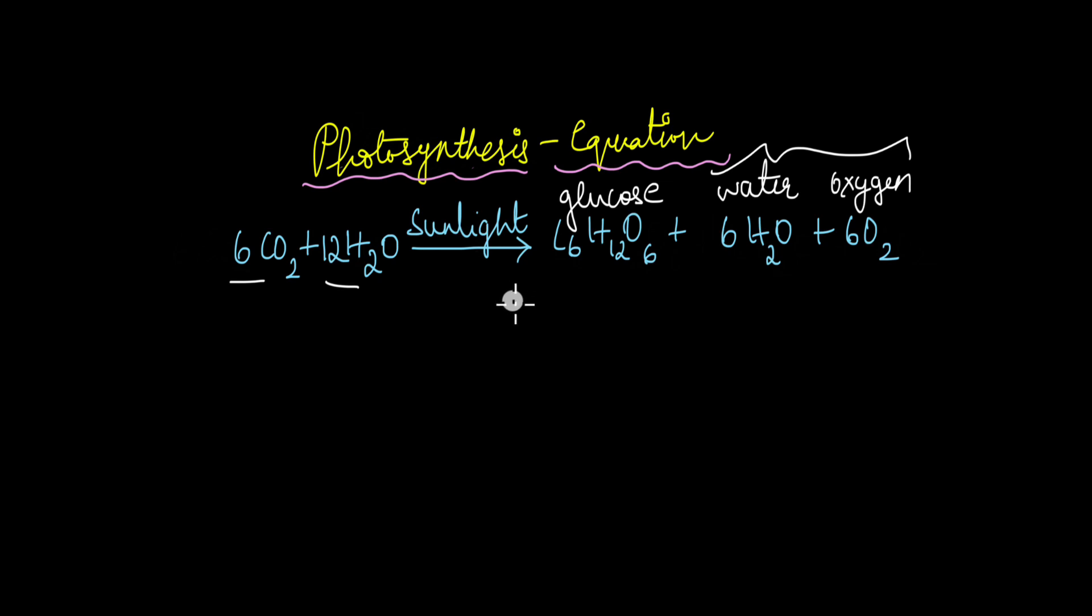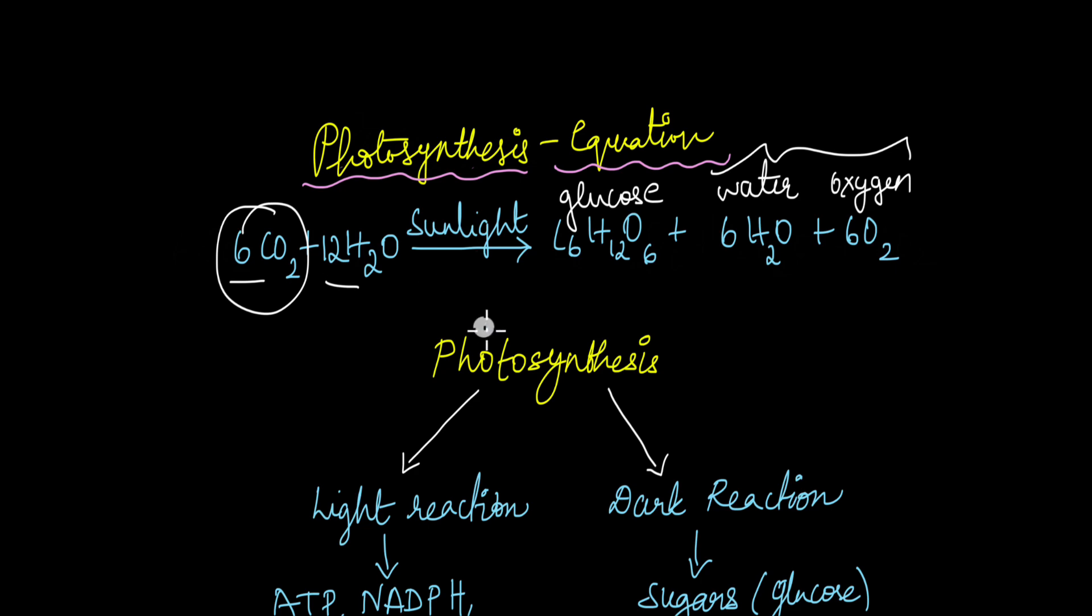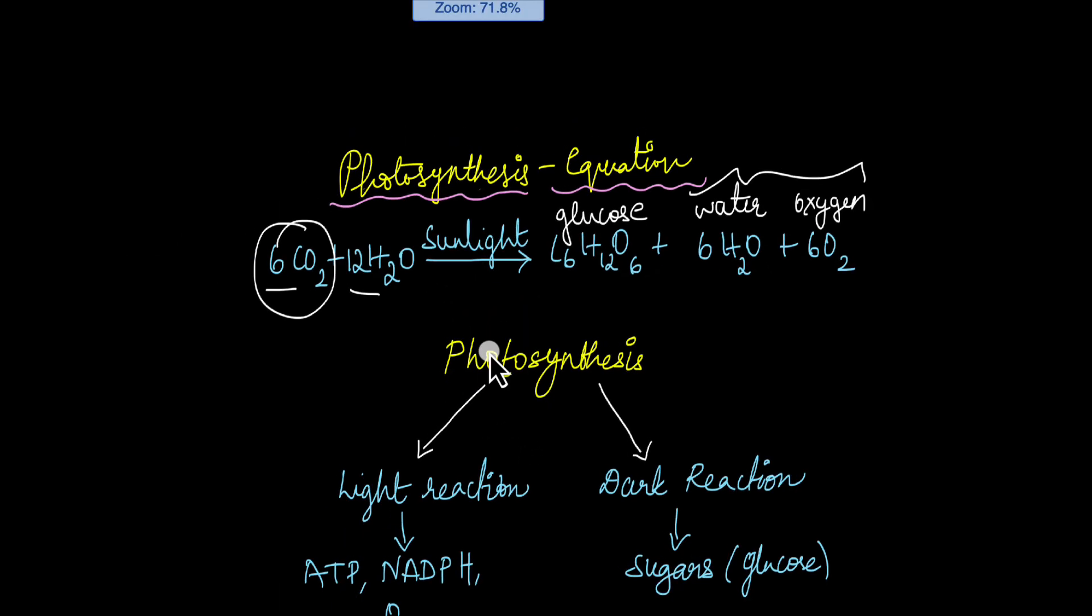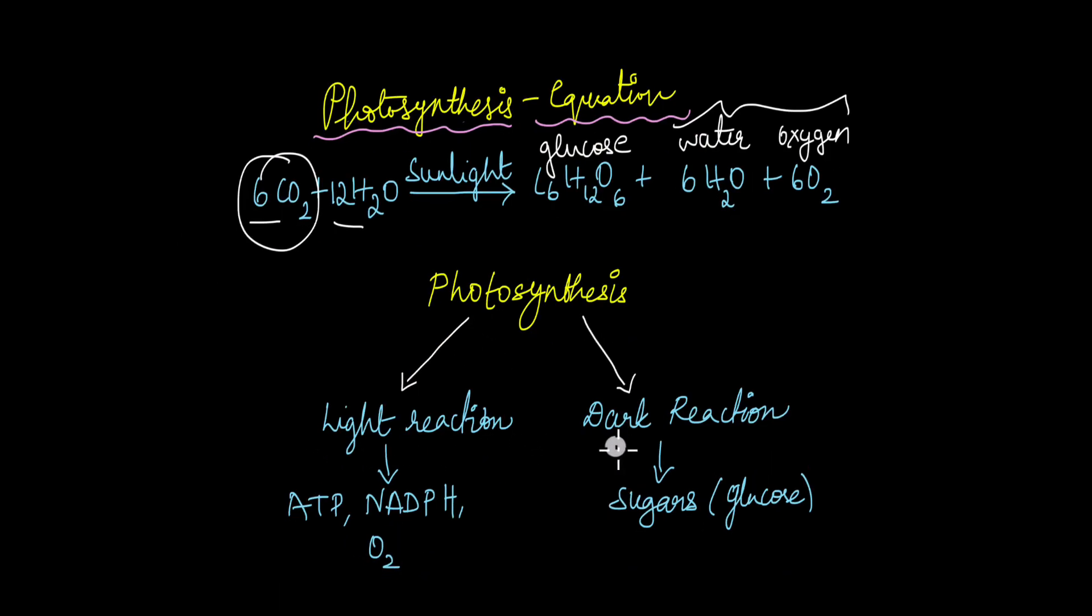What if I were to tell you that photosynthesis is not a straightforward reaction and that carbon dioxide does not even come into the picture until much later in the process? To understand what I mean, you have to understand that photosynthesis is actually split into two distinct reactions: the light reaction and the dark reaction.